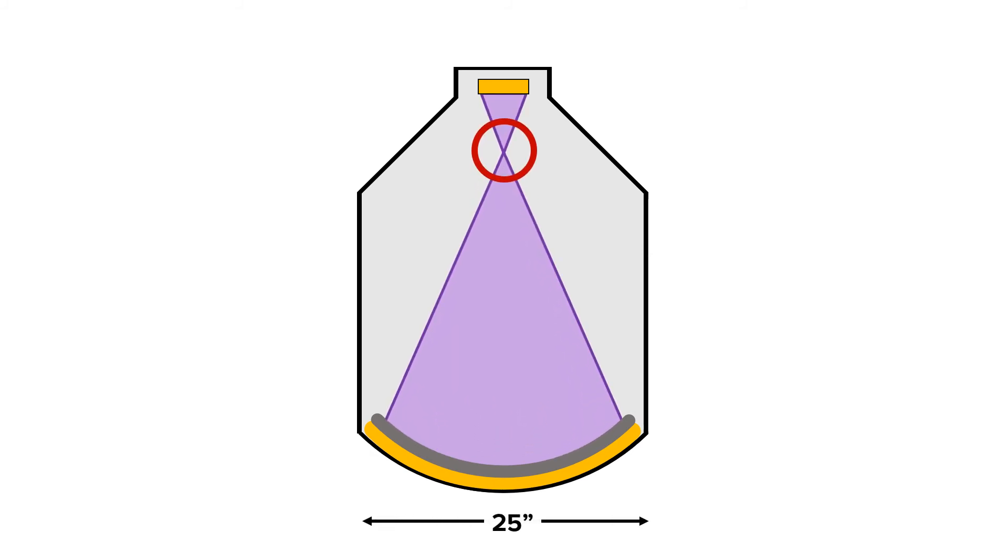The focal spot is closer to the output phosphor when we're using a larger field of view versus when we magnify. That focal spot is going to get further away from the output phosphor. When we go from a 25-centimeter to a 17-centimeter, we increase the voltage across the intensifier. Increasing voltage reduces the field of view and magnifies the image.